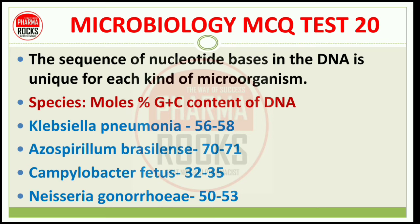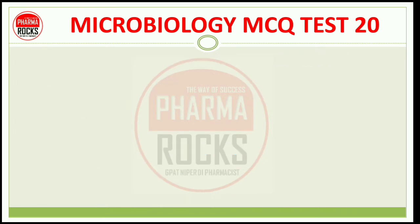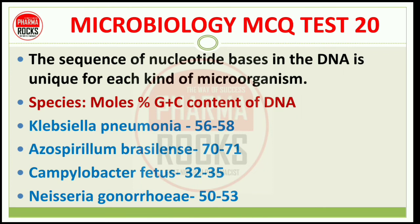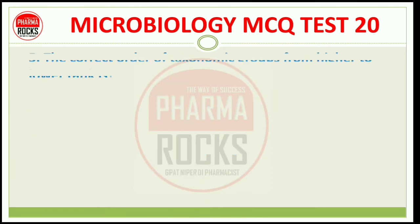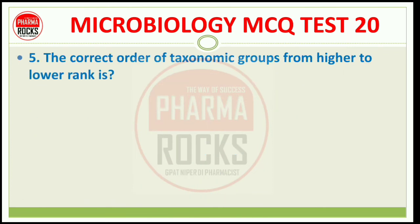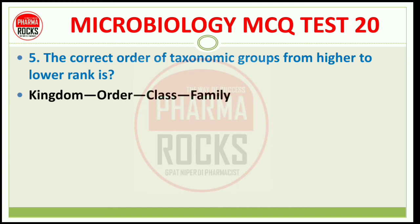This is important for upcoming competitive exams. Solve more such questions with proper solution and explanation in online test series. Question number 5: The correct order of taxonomical groups from higher to lower rank is — options include: kingdom, order, division, family, class, genus, species; or kingdom, division, class, order, family, genus, species.